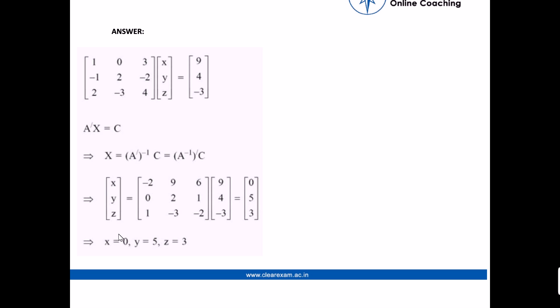So the values of x, y, and z will be: x equals 0, y equals 5, and z equals 3. So here are the values of x, y, z using the matrix. Thank you.